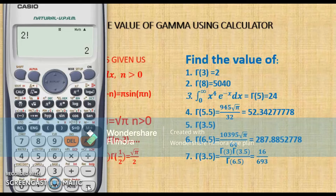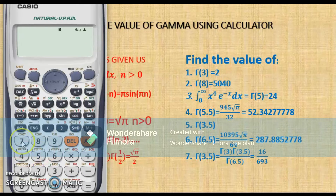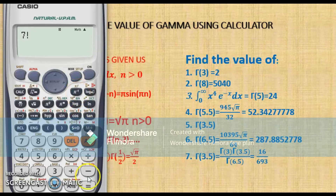The second question is gamma of 8. Gamma of 8 is also expressed as 7 plus 1, so my n is 7. I type in 7, then shift, x to the power negative 1 for factorial, then hit equal, and that gives me the correct answer.